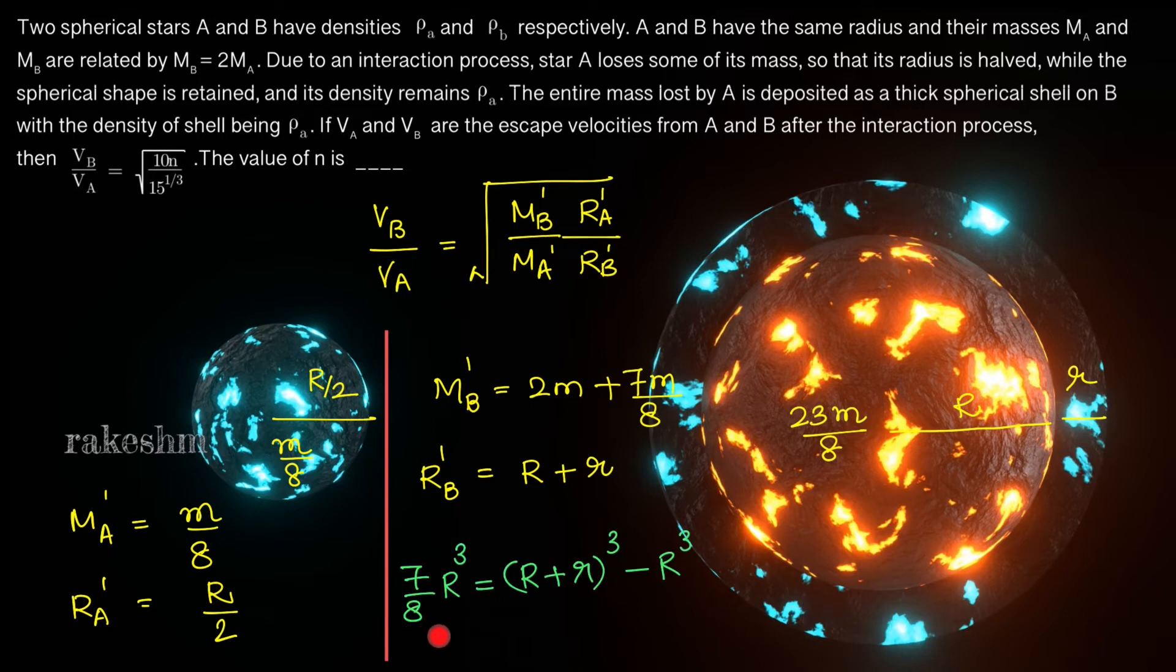From conservation of mass we can say 7/8 M, the mass lost by A, equal to the mass deposited on B which is equal to (R + r)³ - R³. I have directly taken the radius cubed as it is proportional to the mass, so we get R + r equal to 15^(1/3) × R/2.